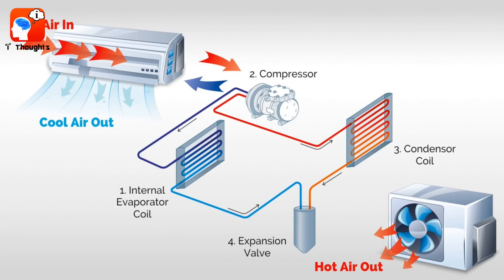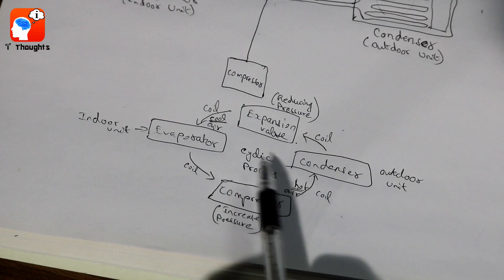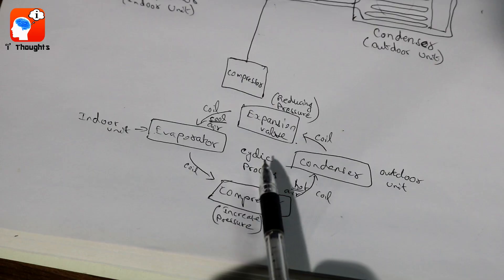This is a cyclic process — this is how the AC works. The room temperature is low and cool.